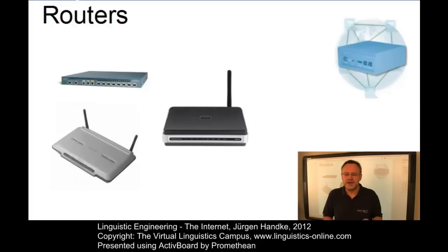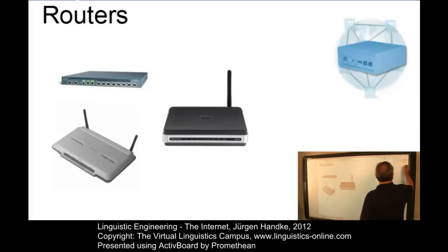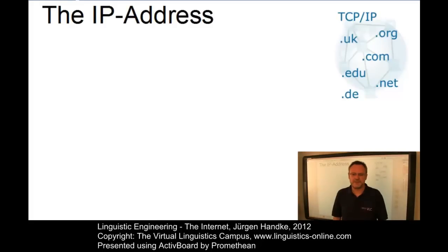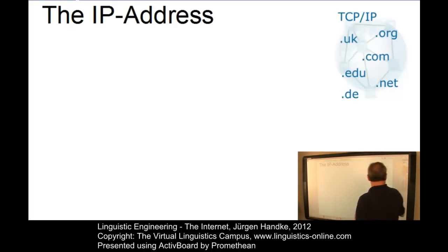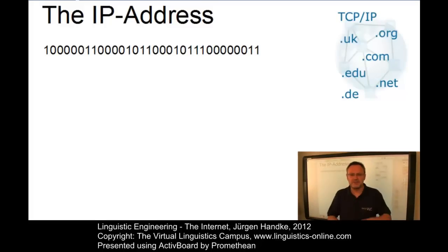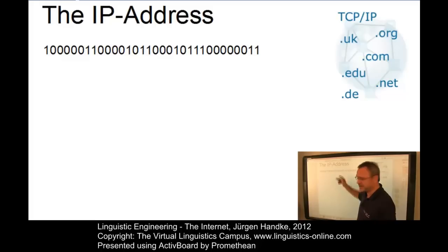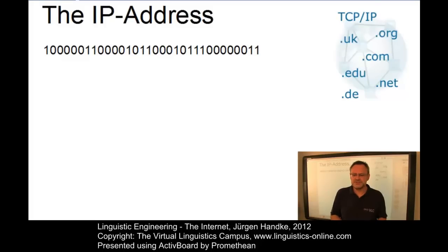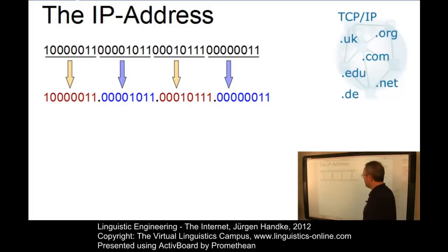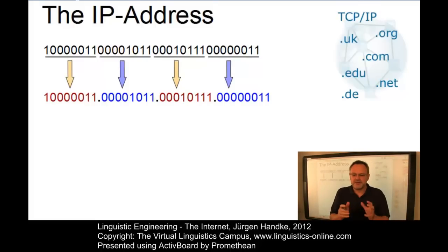Each computer has a so-called IP address or IP number. The IP number is a 32-bit binary number. For this reason, this 32-bit value is normally represented by means of dotted octets, so eight digits grouped into one figure.